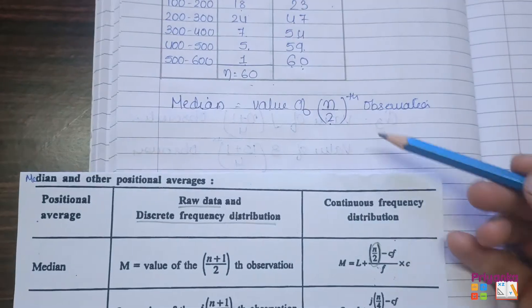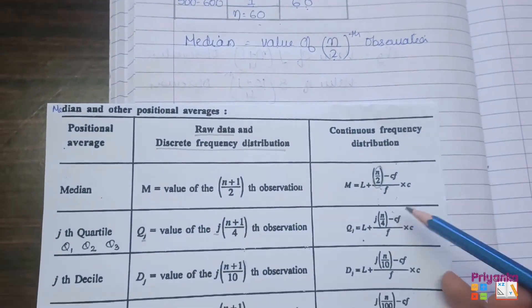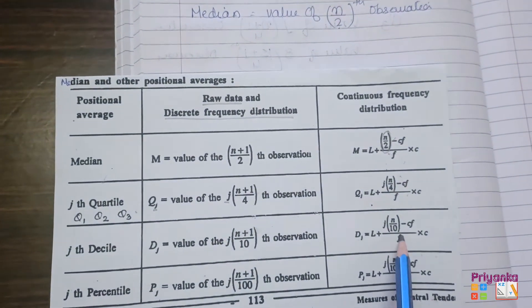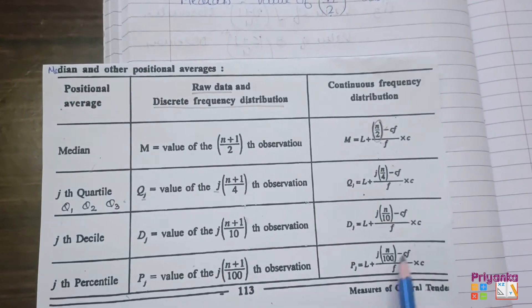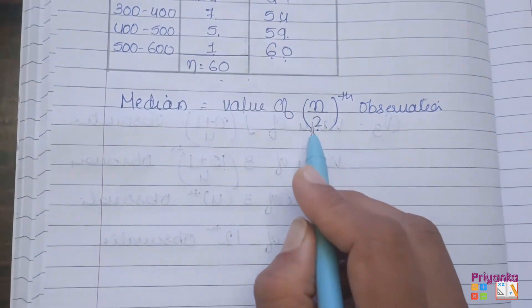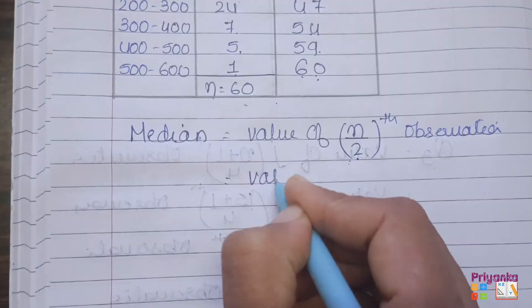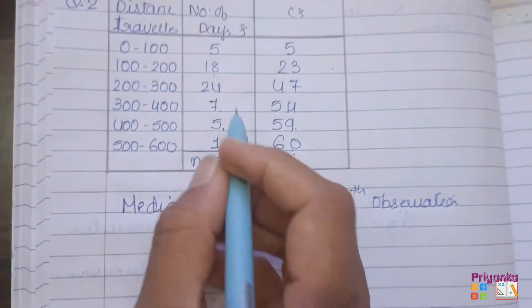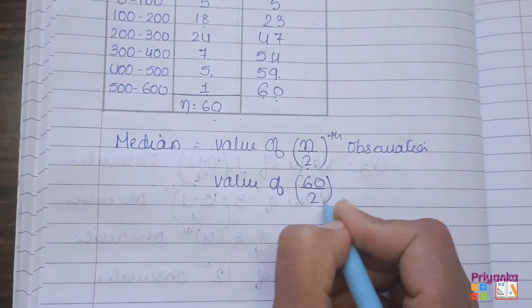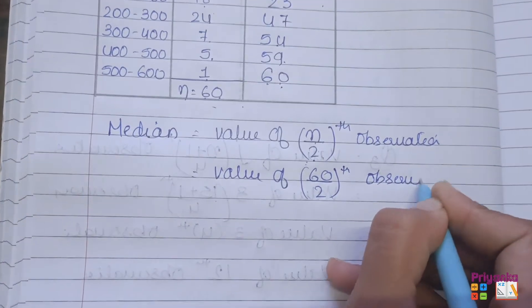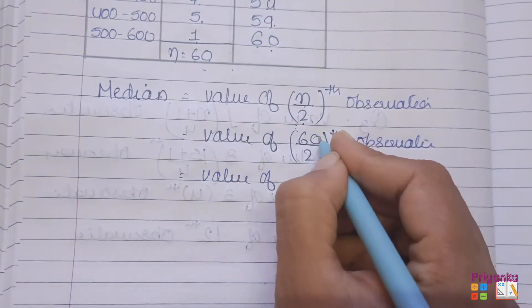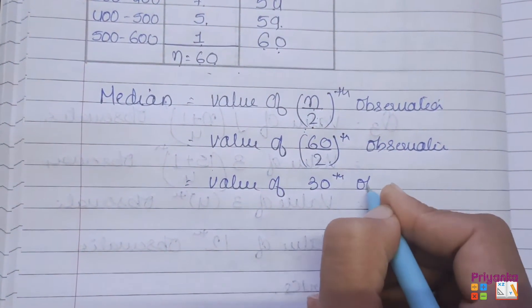The denominator depends on what you are finding: for median keep 2, for quartile keep 4, for decile keep 10, and for percentile keep 100. So the first step before using the big formula is to calculate n/2. Total frequency is 60, so 60 divided by 2 gives the 30th observation.